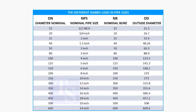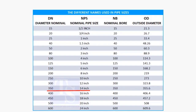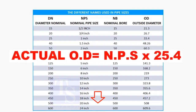In the case of nominal pipe size, the NPS and actual pipe OD are different up to 12 inches. Up to 12 inch pipes, you may need to memorize the actual OD size. For 14 inch and above, multiply the inch size by 25.4 to obtain the actual OD of the pipe.